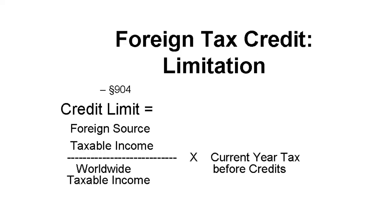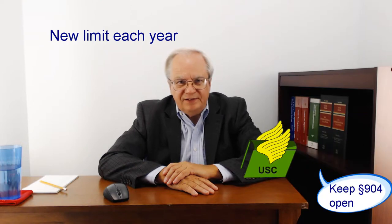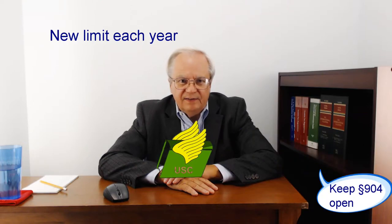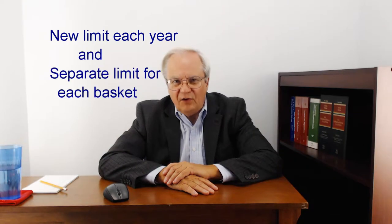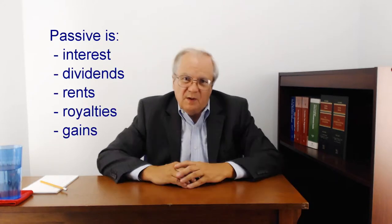The foreign tax credit is limited to the part of U.S. tax caused by net foreign source taxable income. This limitation is computed separately for each year the taxpayer claims a credit. It is also computed separately for each basket.